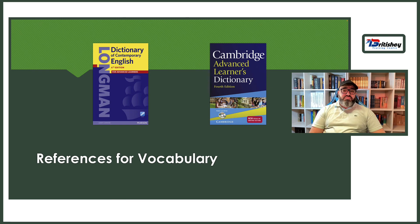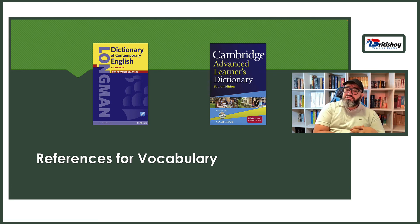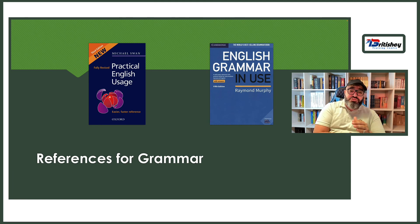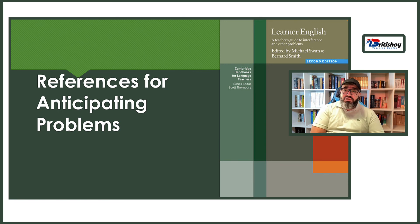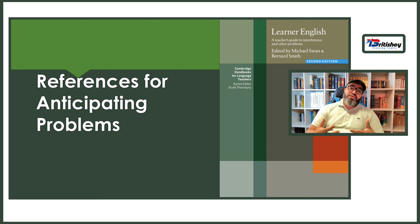For references: for vocabulary I recommend Longman Dictionary of Contemporary English and Cambridge Advanced Learner's Dictionary. For grammar, I recommend Practical English Usage by Michael Swan or English Grammar in Use by Raymond Murphy. For anticipating problems, I recommend Learner English by Michael Swan and Bernard Smith — an amazing resource that helps you discover mistakes traced back to mother language interference.